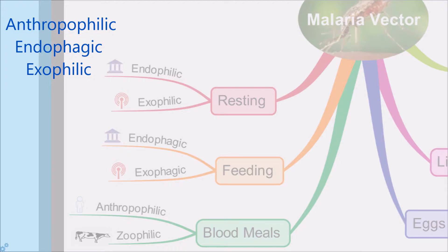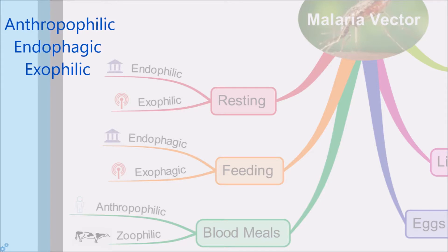Second, endophilic means it will bite indoors. Third, exophilic tells you that this mosquito prefers to rest outside the dwellings after taking the blood meal.